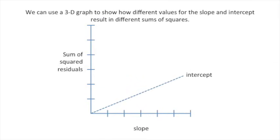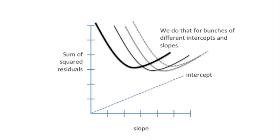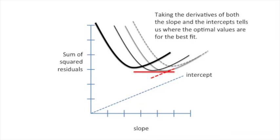We can use a 3D graph to show how different values for the slope and intercept result in different sums of squares. In this graph, the intercept is the z-axis, so it's going back sort of deep into your computer screen. And if we select one value for the intercept, for example, assume we set the intercept value to be 3, then we could change values for the slope and see how an intercept of 3 plus different values for the slope would affect the sum of squared residuals. Anyways, we do that for bunches of different intercepts and slopes. Taking the derivatives of both the slope and the intercepts tells us where the optimal values are for the best fit.